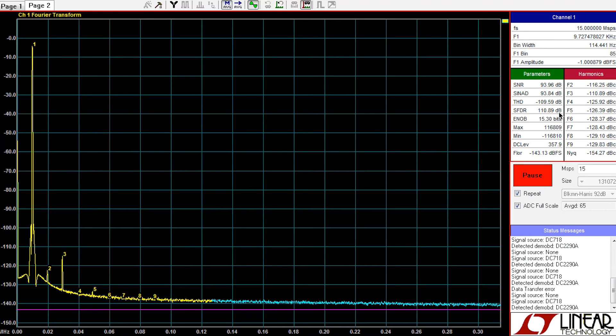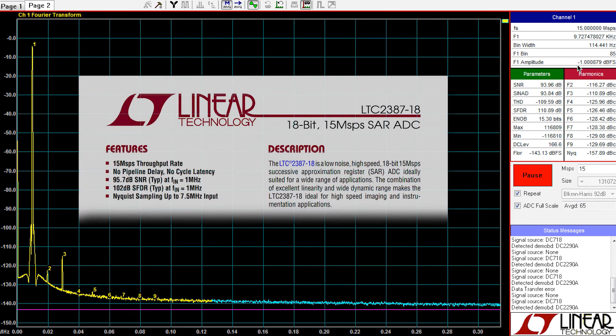Using PScope, we can see the AC performance of the LTC-2387-18, driven with a 10 kHz tone. At the left of the screen, you can see the fundamental at an amplitude of negative 1 dB full scale. The performance here approaches the typical datasheet specifications for the ADC, even though it's a composite of the entire signal chain. You can see the SNR of 94 dB, an SFDR of 111 dB.